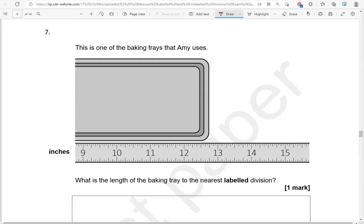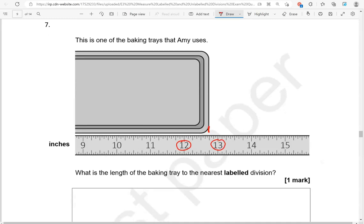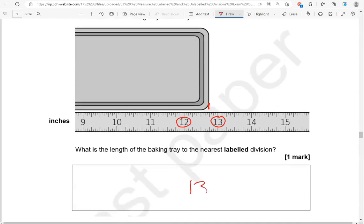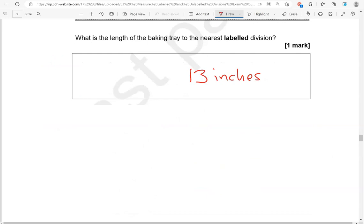This is one of the baking trays that Amy uses. What is the length of the baking tray to the nearest unlabeled division? It's in between 12 and 13, it's closer to 13. So we're going to say 13 inches. We shouldn't forget the unit.